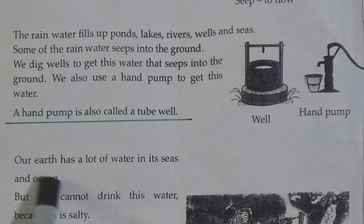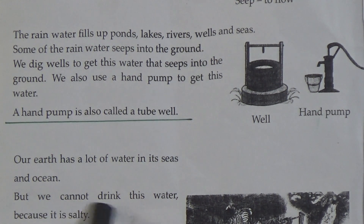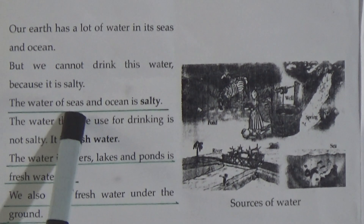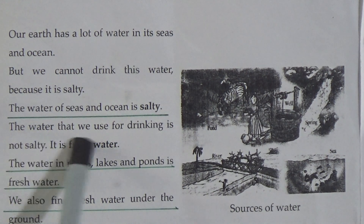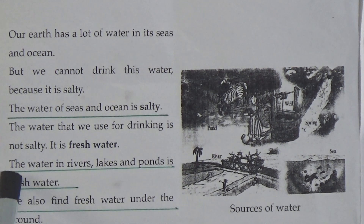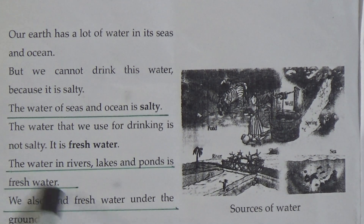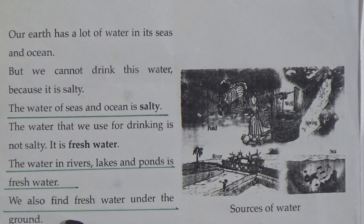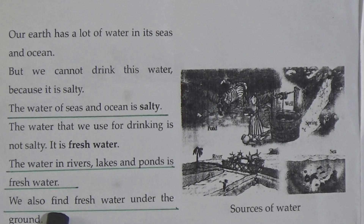Our earth has a lot of water in its seas and oceans, but we cannot drink this water because it is salty — underline this line. The water that we use for drinking is not salty; it is fresh water. The water in rivers, lakes, and ponds is fresh water — underline this line. We also find fresh water under the ground.